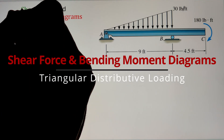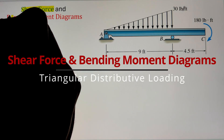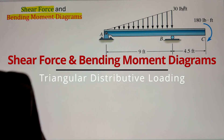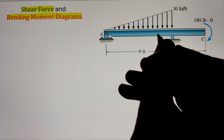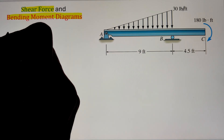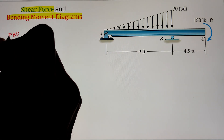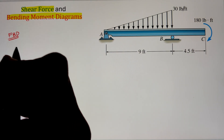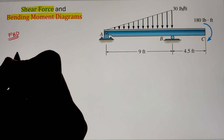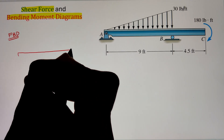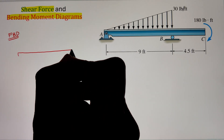In order to draw the shear force and bending moment diagram of an overhanging beam including a triangular distributive loading, we can start by first figuring out the support reactions. To do that, let's draw our free body diagram.